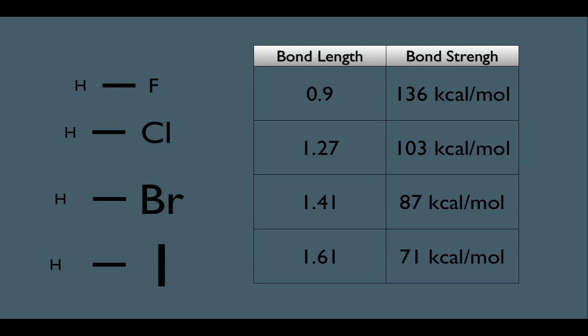Bond length is increasing as we move from the HF down to the HI, and bond strength is decreasing as we move down these molecules. Take a few seconds and notice these trends from the chart.